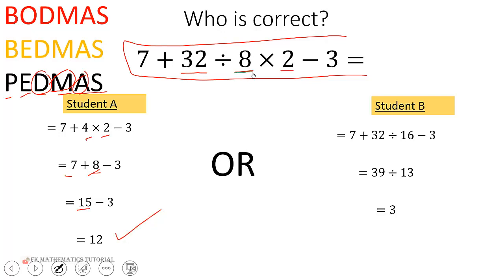Student B multiplied 8 by 2 to get 16, so he did multiplication first. Then after that, he added 7...